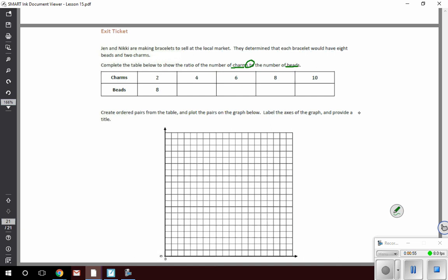Right away the charms are already filled in and I can see a pattern in the way that's filled in. Two, four, six, eight, ten. So they're counting by twos each time which is an additive pattern.